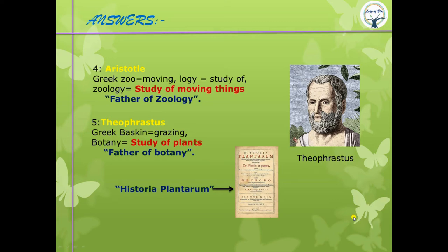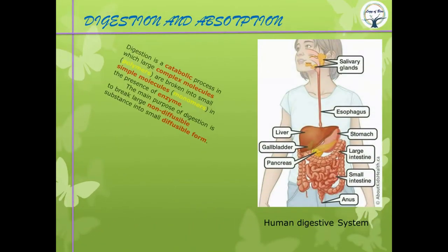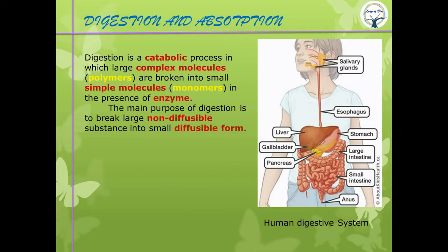Now let's proceed to our main topic: digestion. Digestion is a catabolic process in which large complex molecules — polymers — are broken down into small simpler molecules — monomers. Poly means many units; mono means single unit. Monomers join to make polymers in a reaction called polymerization.